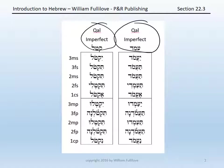With amad, almost always you will see a compound schwa: ya'amod, ta'amod, ta'amod, ta'amdi, e'emod, ya'amdu, ta'amodna, ta'amdu, ta'amodna, and na'amod.